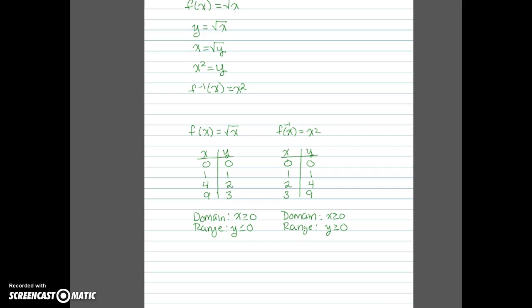Even though we're used to x squared having a domain of all reals, remember it came from the inverse so the domain is restricted. Let's go ahead and graph these two functions. I'm focusing on the first quadrant because of the domain and range for each, and I'll go out to 5 on either axis.